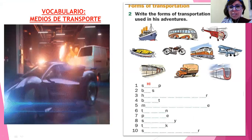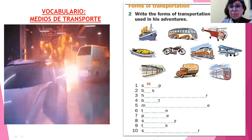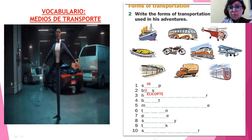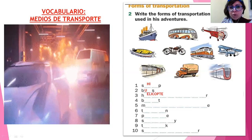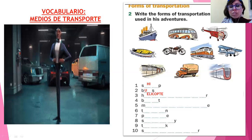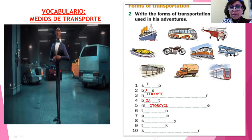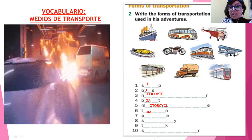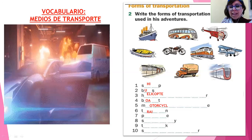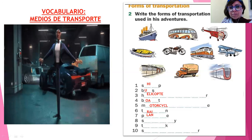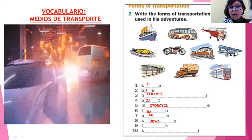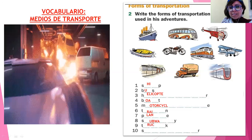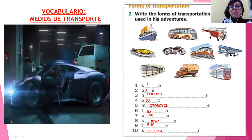Number two — what is number two? It's a bus. Number three is a helicopter. Number four — what about number four? A boat. Number five, a motorcycle. Number six, a train. Number seven — what about number seven? Plane. Number eight, subway. Number nine, truck. And number ten is a streetcar. Very good.